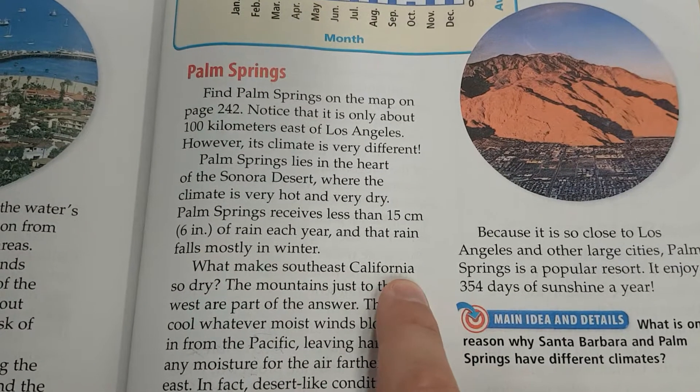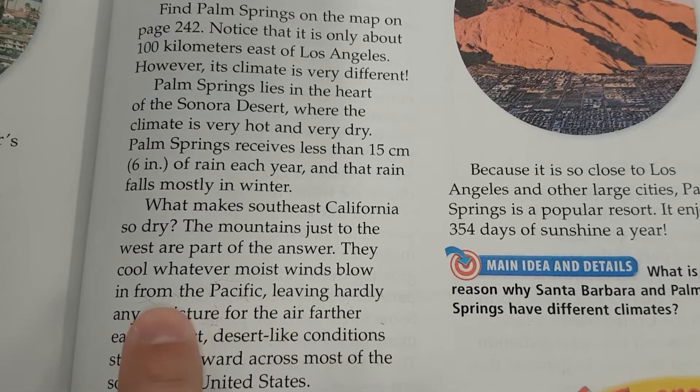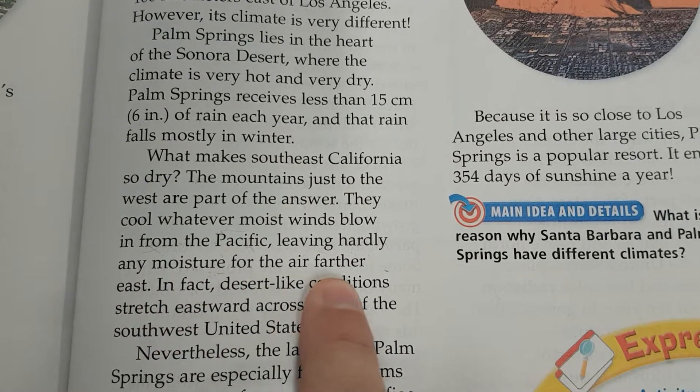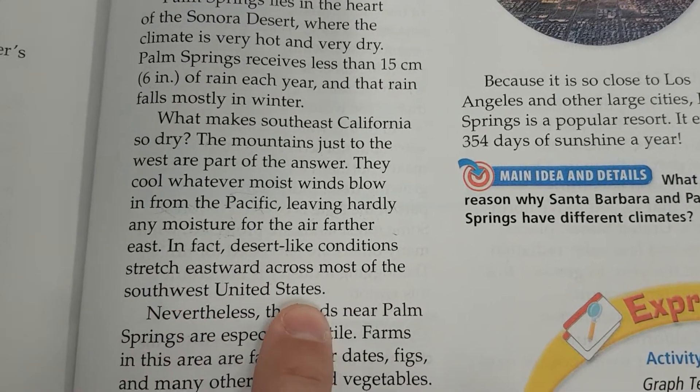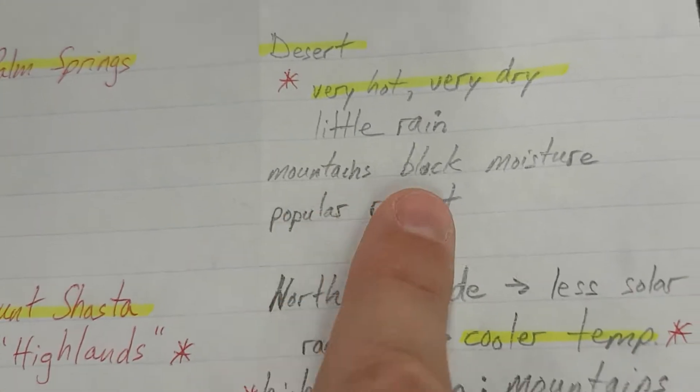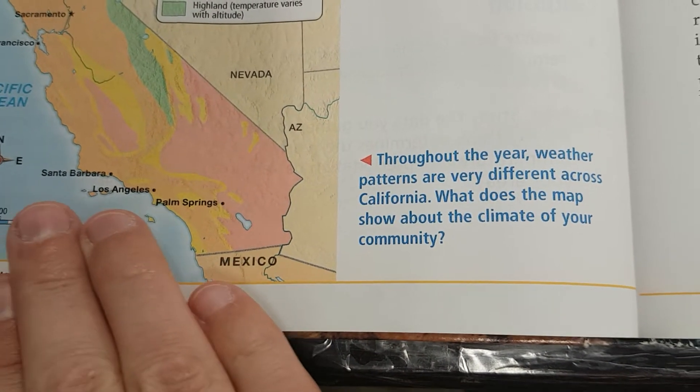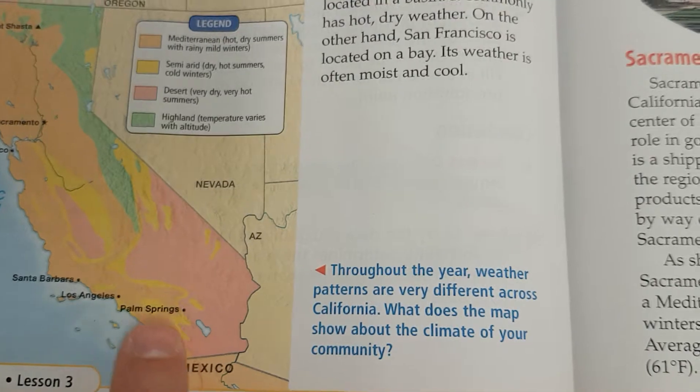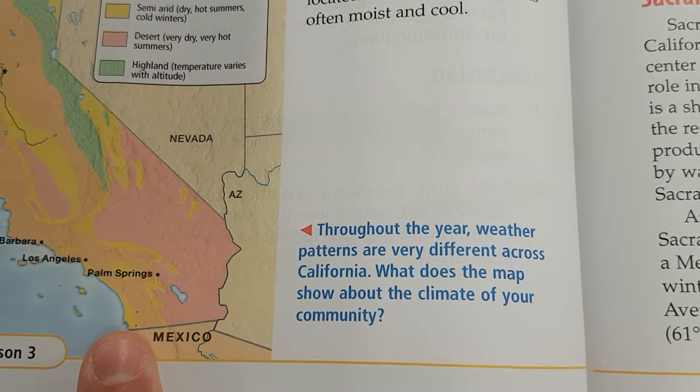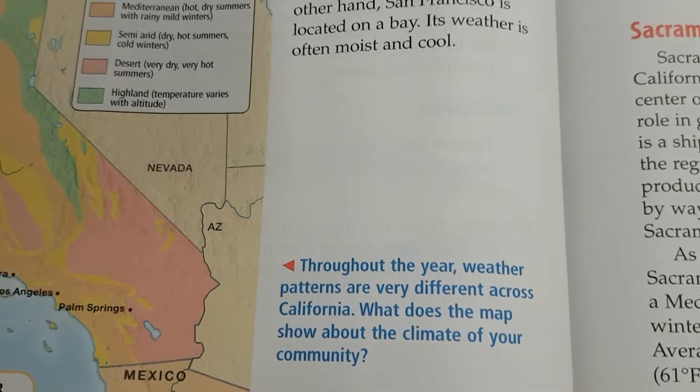What makes southeast California so dry? The mountains just to the west are part of the answer. They cool whatever moist wind blows in from the Pacific, leaving hardly any moisture for the air farther east. In fact, desert-like conditions stretch eastward across most of the southwest United States. Okay, so mountains block moisture. We've got all along that yellow part right there is a mountain range. So all the moisture that blows in from the Pacific Ocean kind of stops in this orangish area. There's that Mediterranean climate. It gets blocked by those mountains and everything over here towards Arizona and New Mexico ends up being desert.